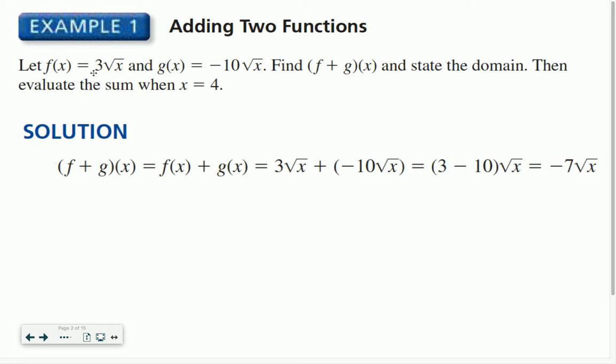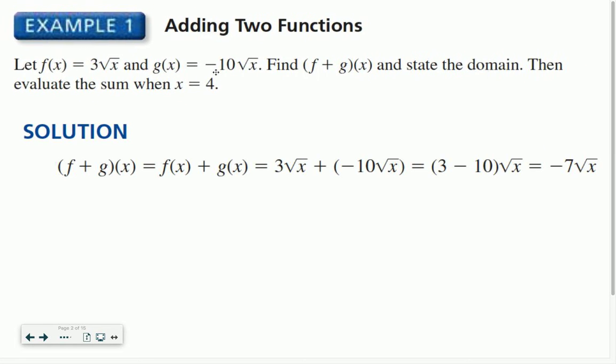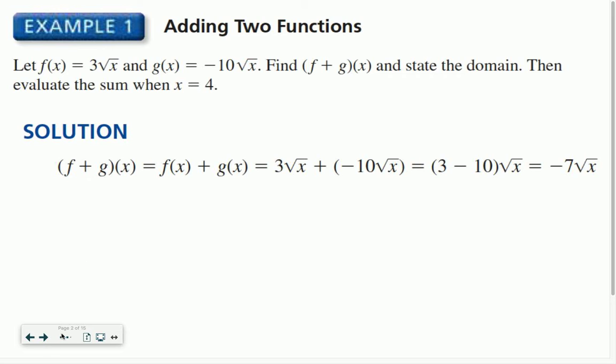So in this example, let f(x) equal 3 times the square root of x, and g(x) is negative 10 times the square root of x.